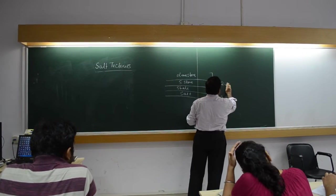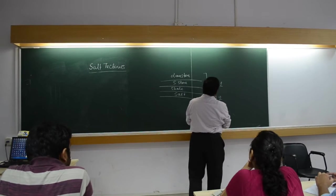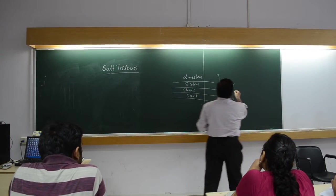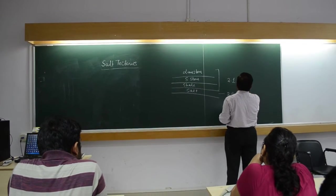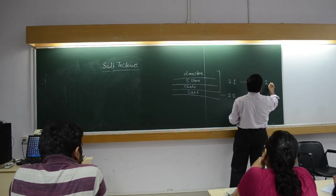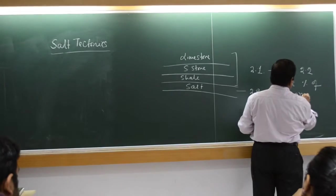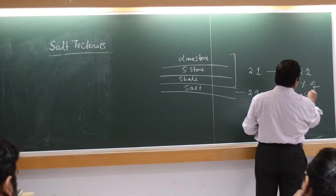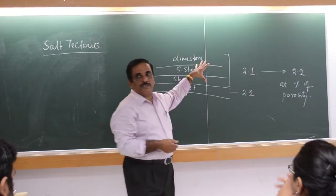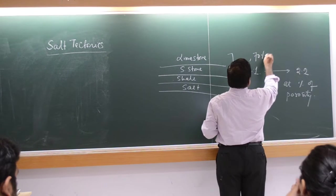Initially it was something like 2.1. Now, what he is telling: when this material will become 2.2 — at what depth, at what percentage of course? So, now it is 2.1, that is why it is occurring at the top, because it has 70 percent porosity.